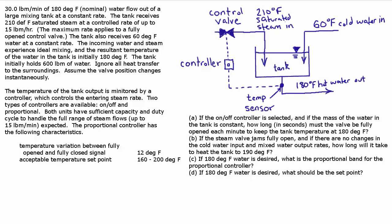Part B: if the steam valve jams fully open and there are no changes in the cold water input and mixed water output rates, how long will it take to heat the tank to 190 degrees Fahrenheit? Part C: if 180 degrees Fahrenheit water is desired, what's the proportional band for the proportional controller? And Part D: if 180 degrees Fahrenheit water is desired, what should be the set point?